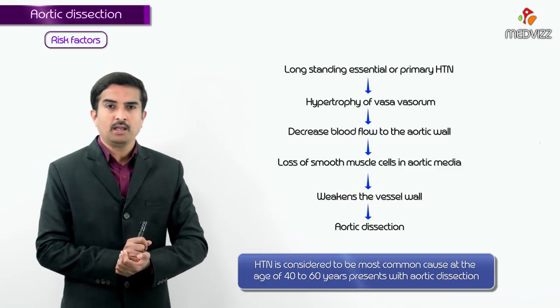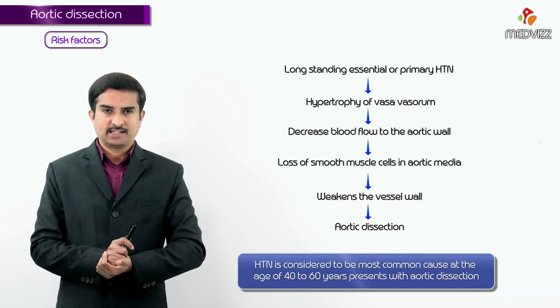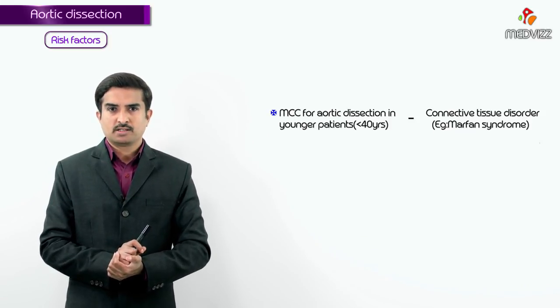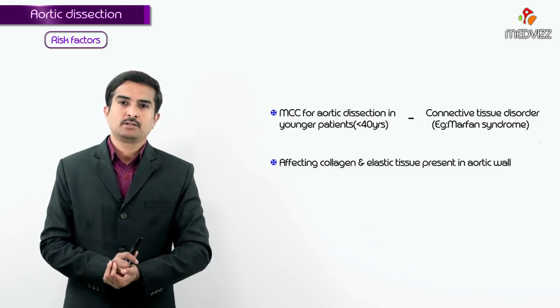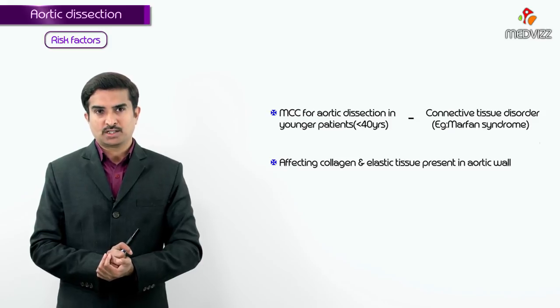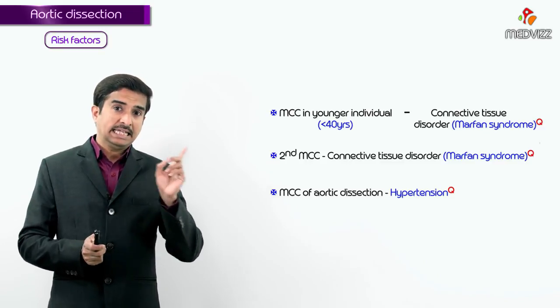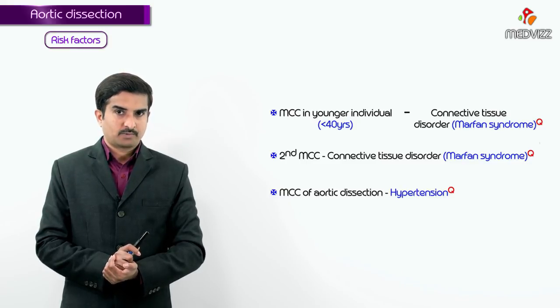That is why hypertension is the most common cause in individuals aged 40 to 60 presenting with aortic dissection. However, in younger patients — less than 40 years of age — hypertension is not the most common cause. Connective tissue disorders affecting collagen and elastic tissue are considered the most common cause in younger patients, with Marfan syndrome being the most common cause of aortic dissection in younger individuals.